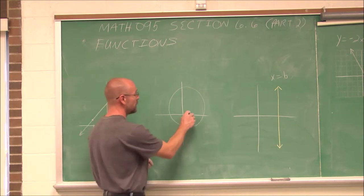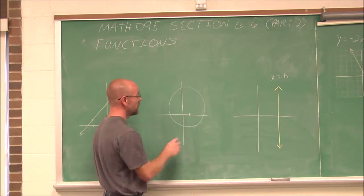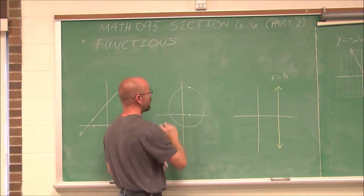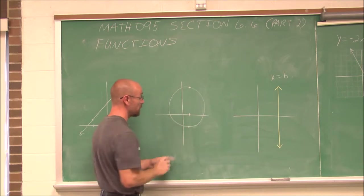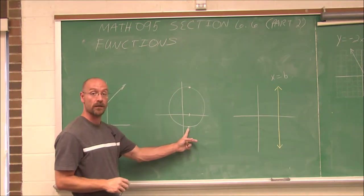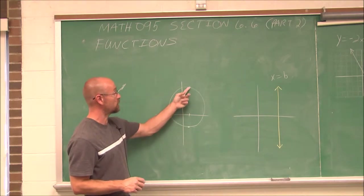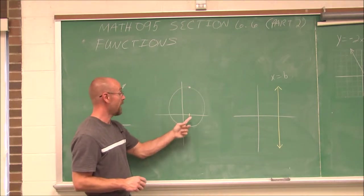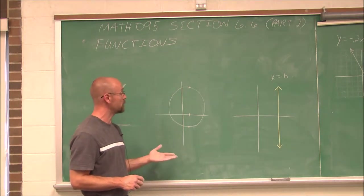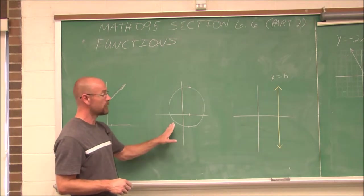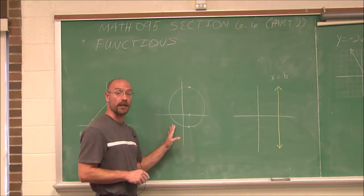What about this one? Let's say I choose a value for x — it would correspond to a point here, but it would also correspond to a point down here. So for this input I would have (x, y) and the same x for another y. The x value repeats. This is not a function; it is only a relation.